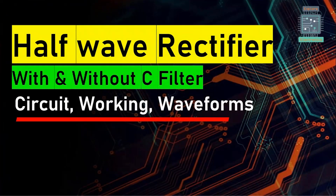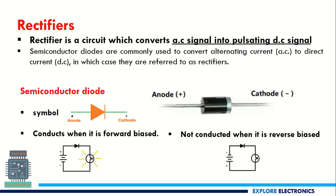Hello everyone, welcome back to Explore Electronics. In this video, let's see the half wave rectifier — with capacitor filter and without capacitor filter — and how it works with waveforms. Let us look at the definition of rectifier first: a rectifier is a circuit which converts an AC signal into pulsating DC.